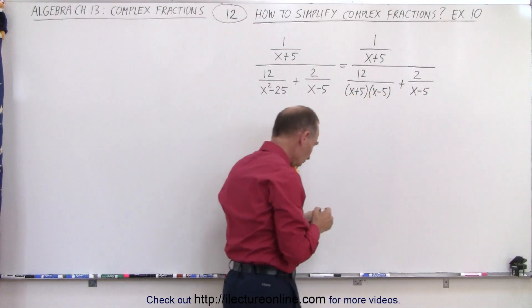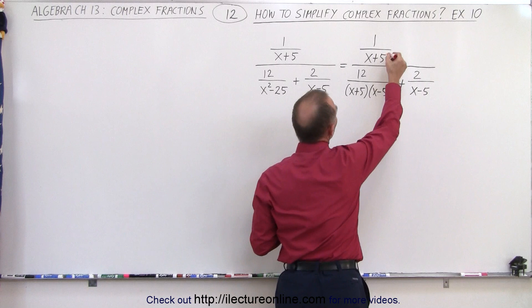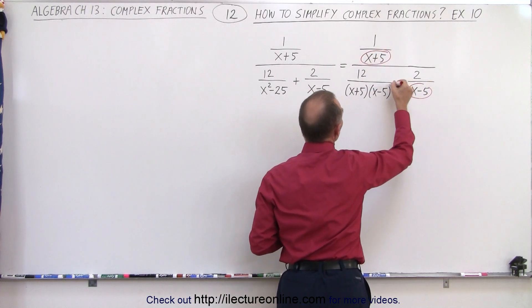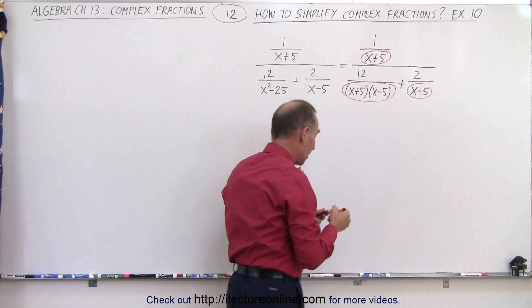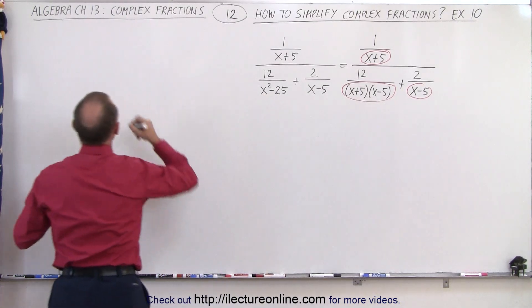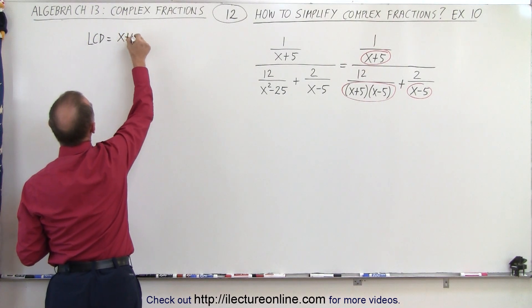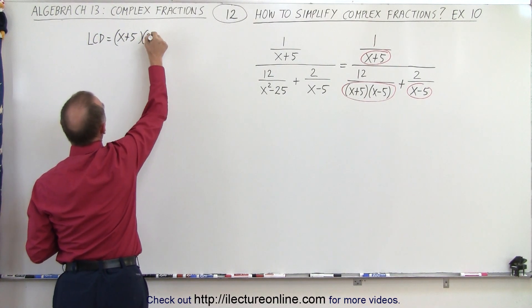Alright, so now when we look at all the denominators, it becomes quite obvious what the lowest common denominator should be. It looks like it's going to be the product of x plus 5, times x minus 5. So let's write that down. The LCD is equal to x plus 5, times x minus 5.